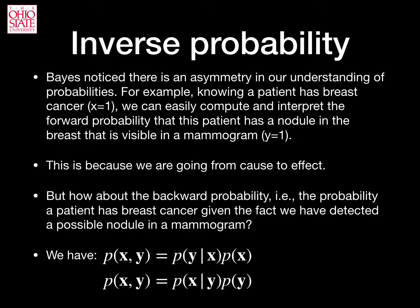Here, the probability of x and y is equal to the probability of y given x times the probability of x. That is, the probability of cancer and detecting a nodule in a mammogram equals the probability of detecting the nodule in a mammogram given the knowledge that the patient has cancer, times the probability that that patient has cancer. But notice that the probability of x and y can also be written as the probability that the patient has cancer given that we have detected the nodule in a mammogram, times the probability of detecting the nodule. This was Bayes' insight.